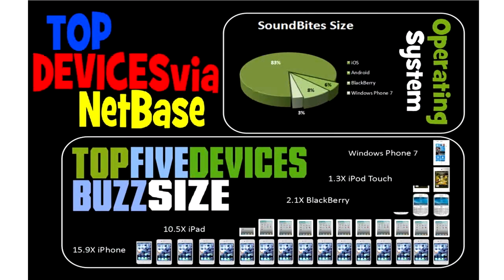This infographic really shows you the top five devices. iPhone generated 15.9 times more buzz than the fifth leading device, which is the Windows Phone. In the top five devices, three of them are Apple products on the iOS platform. iOS makes up 83% of the soundbites. This was a really important fact — it lets us know how important it is to pay attention to the iPhone and the iPad, and make sure our app ends up in the App Store.